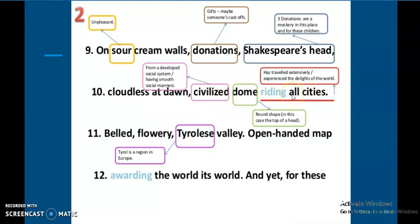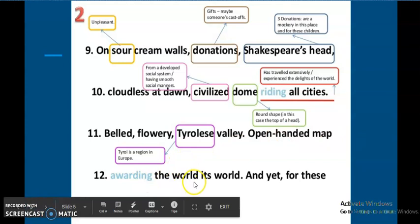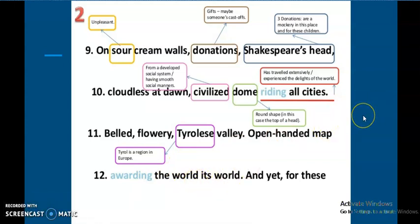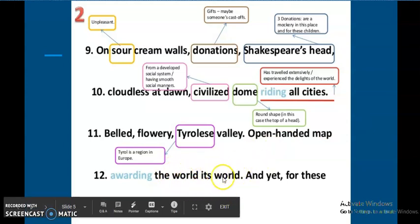This is the idea that the poet is trying to get. 'Civilized dome riding all cities,' in this case the donations which are like civilized domes from a developed social system, having smooth social manners riding all cities. 'Belled, flowery, Tyrolese valley.' Tyrol is a region in Europe. He's saying that the images, I'm sure in your classroom also you've seen lots of pictures of themes and objects and topics connected to your education. Just like that, they have these images, these pictures of civilization, pictures of flowers and areas of the Tyrolese valley where they have a very good life, which is in big contrast with the classroom that they have inside. 'Open-handed map awarding the world its world.' And yet these maps are awarding the world to these children. The world in this case, the first world refers to the world of the children and the second world refers to the actual big world.